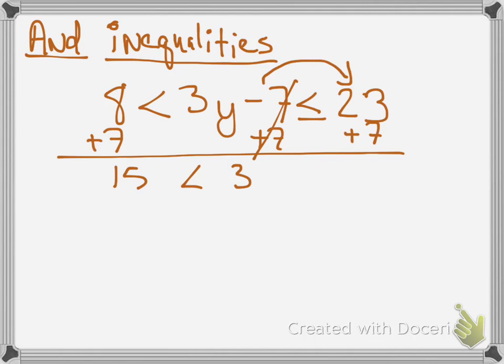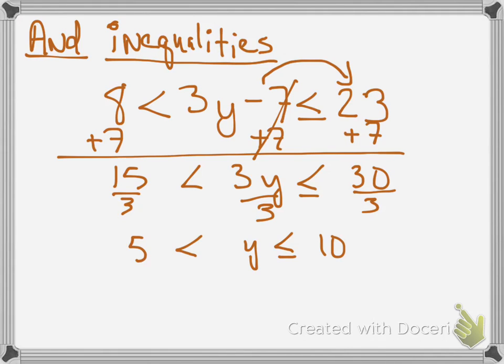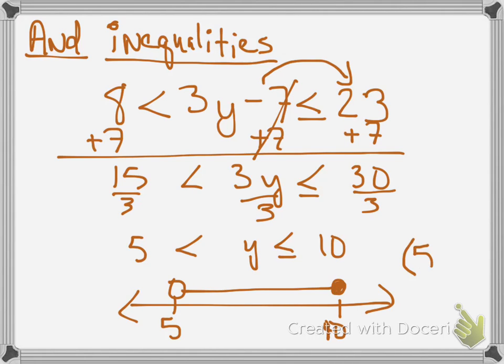So I now have 8 + 7 = 15, 23 + 7 = 30, the seven is gone in the middle, and now I divide everything by three. Now I have 5 < y ≤ 10. I would graph that with a close dot at ten, open dot at five, and in interval notation that would be (5, 10].